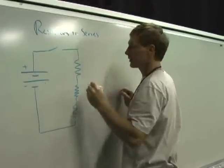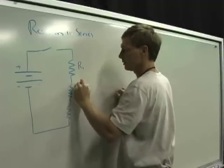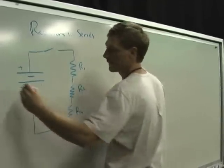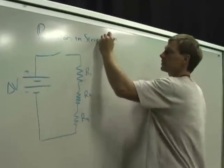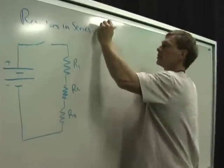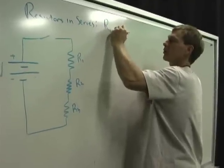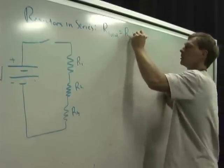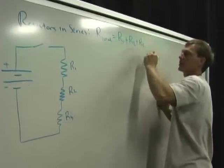And so they increase the resistance. I call this R1, R2, R3, although I can have any number if I want. There's the voltage. And here's the deal for resistors in series. The resistances add. So the total resistance, R total, is equal to R1 plus R2 plus R3.